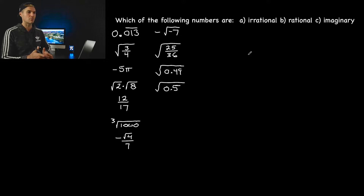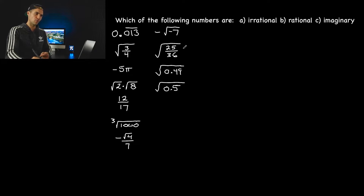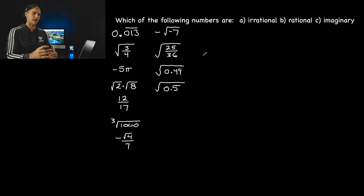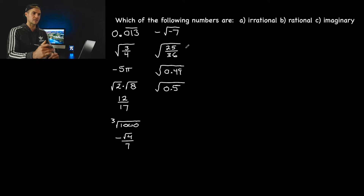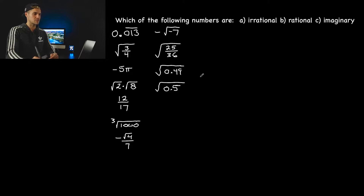Those three categories are irrational numbers, rational numbers, and imaginary numbers. I have gone through a video before where I did an overview of the different classifications, going into detail with real numbers, imaginary numbers, natural numbers, et cetera. If you want to review that, I'll put a link to that video just below this one as support. However, in this one, I will do a quick general review of how the classifications work.